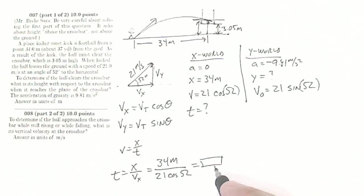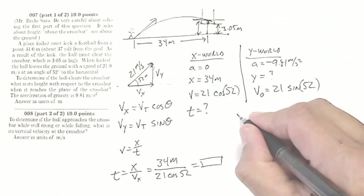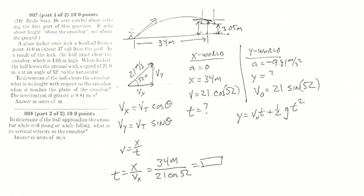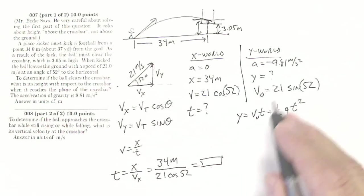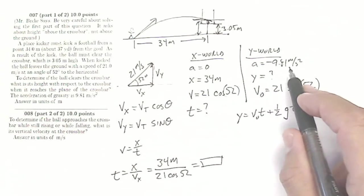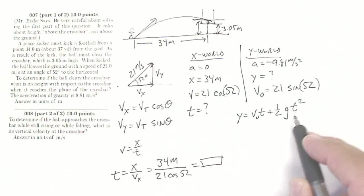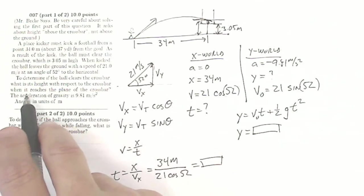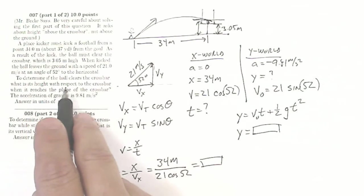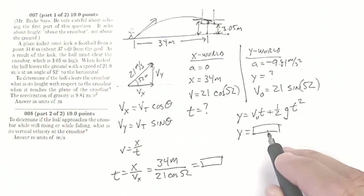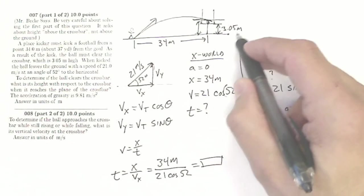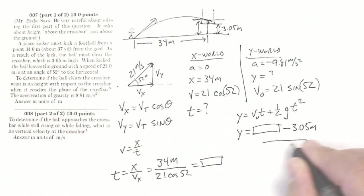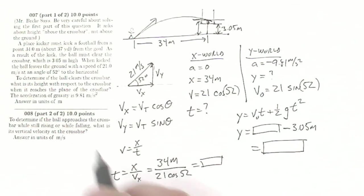Using that time, I need to find how high the ball is when it reaches that point. That will be: y equals v₀t plus one-half g t squared. I have my time from the x-world calculation, my initial y-velocity of 21 sine 52, and my acceleration of negative 9.81 — make sure you keep it negative. That solves for my total height. But since the question asks for height with respect to the crossbar, I take that result and subtract 3.05 meters to get my height above the crossbar. That is my answer to question seven.